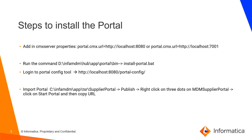After that, we need to run the command install-portal.bat from the path infoMDM/hub/app/portal/bin. Once this command runs successfully, we need to launch the Portal Config Tool and from there import a Supplier Portal zip file that we get from the infoMDM/app/TPR/supplier-portal path.